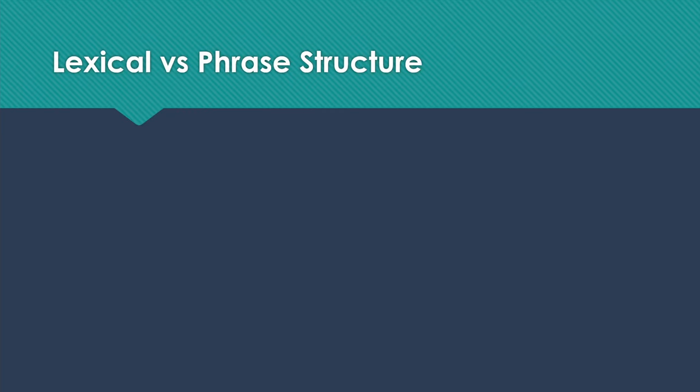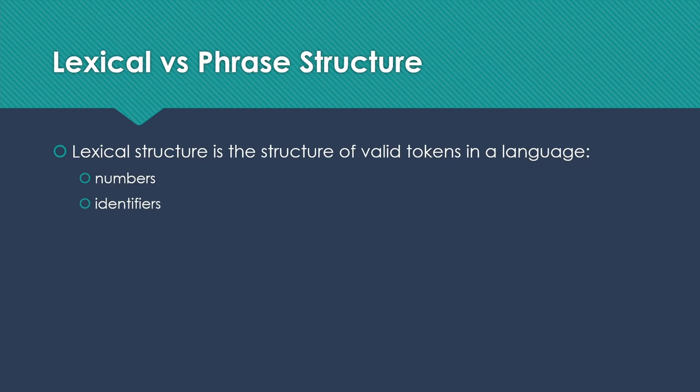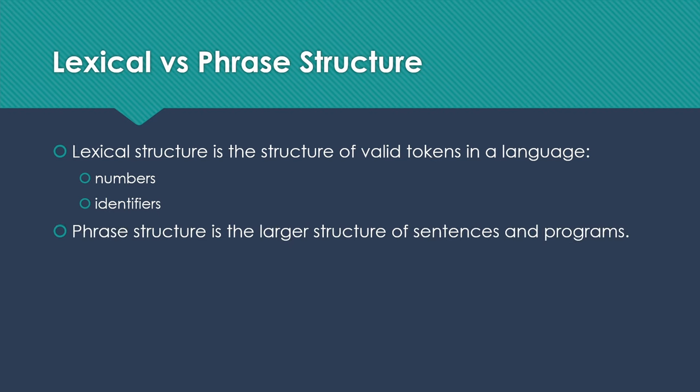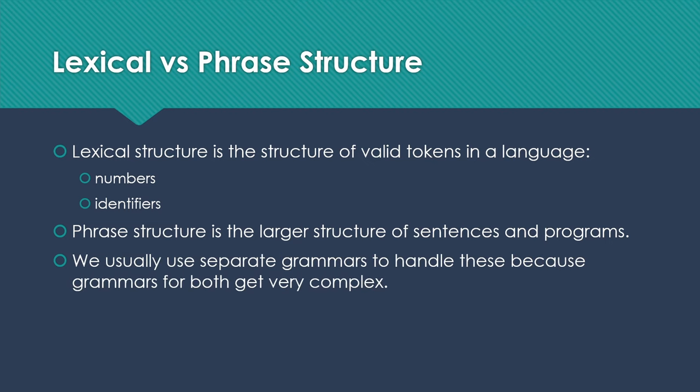We have both lexical and phrase structure. By lexical structure, we mean the structure of the valid tokens in a language, things like numbers and identifiers. By phrase structure, we mean the larger structure of sentences and programs, the kind of structure that the second example I showed you is about, whereas the first example was about lexical structure. In general, when we're dealing with programming languages, and actually natural languages as well, we tend to use separate grammars to handle lexical structure versus phrase structure. Because when we try to combine them, things can get very complex and ugly.